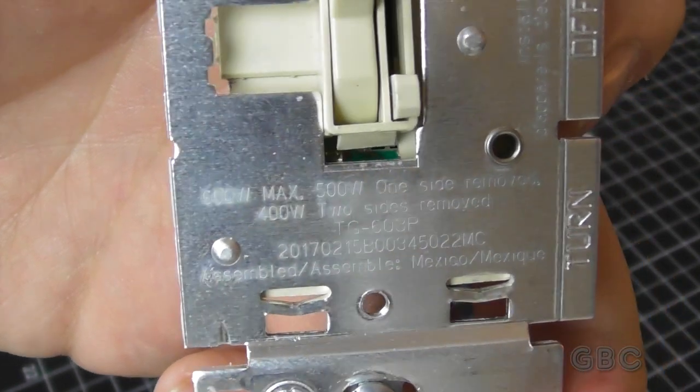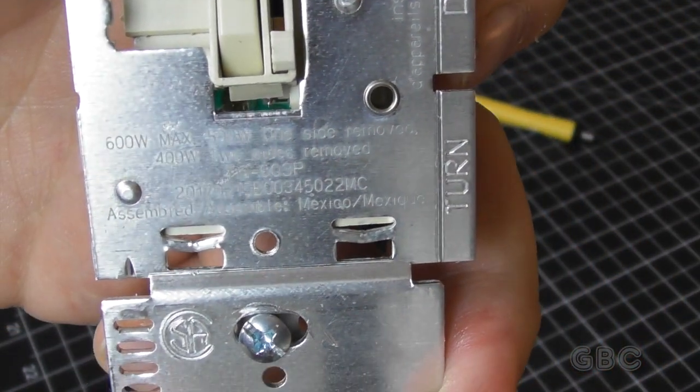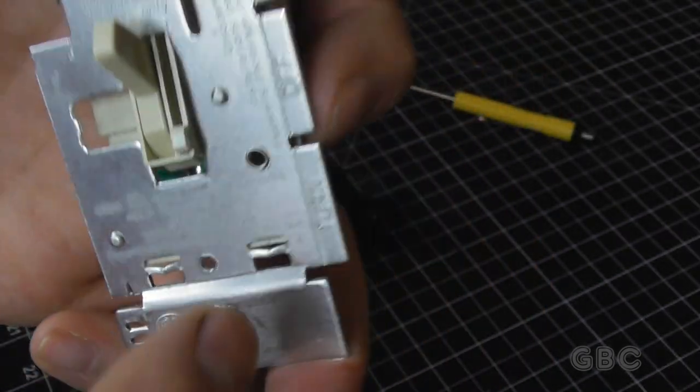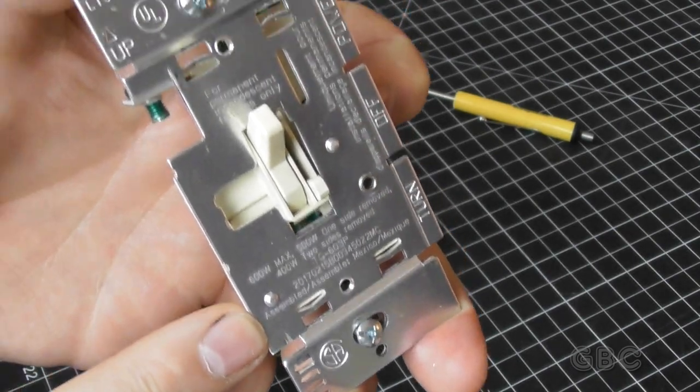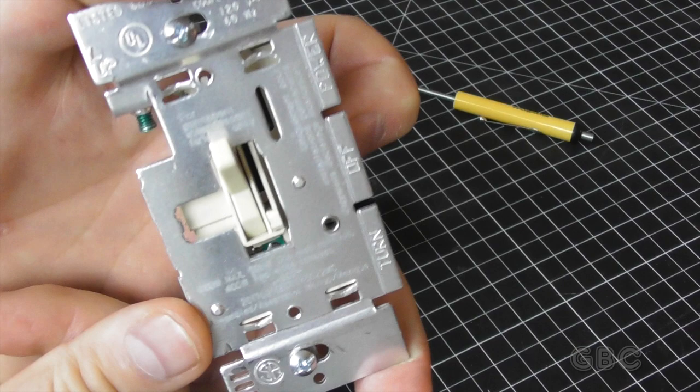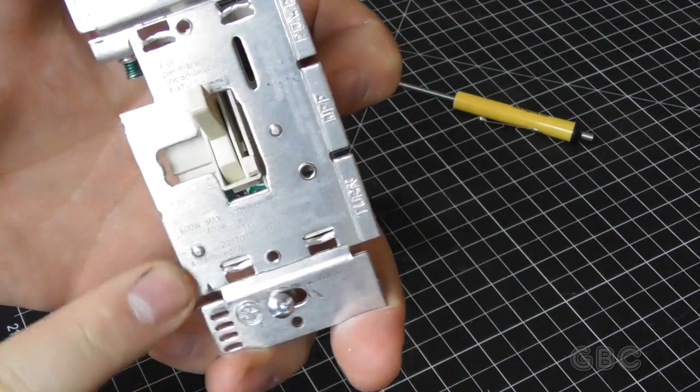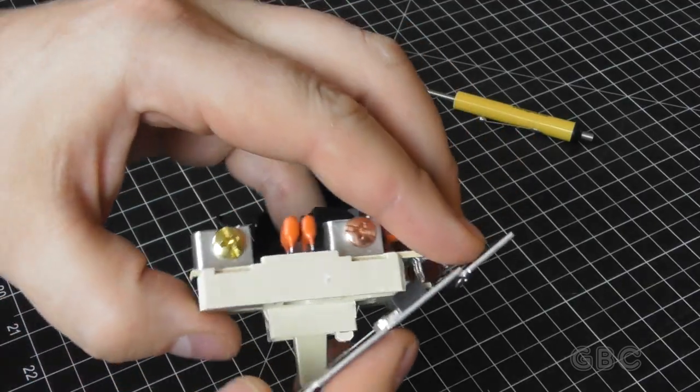It's rated 600 watts max. 500 if you remove one side and 400 if you remove both. What they're referring to are these tabs here. As you can see they are missing on this side. And in order to get this to fit in a two-gang box you have to take off the tabs on one side. So this is set up for 500 watts at this point.